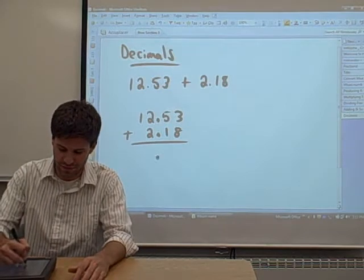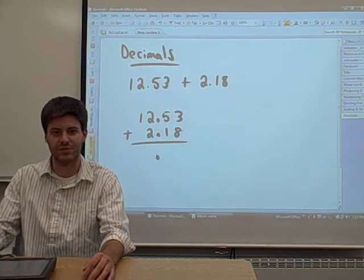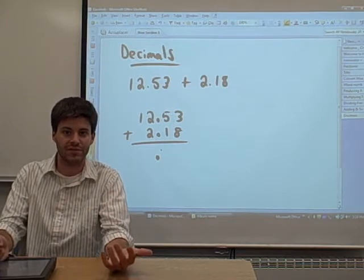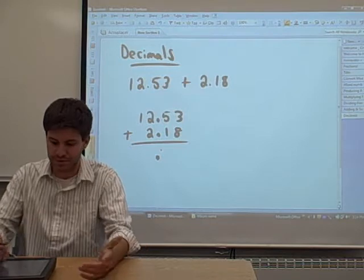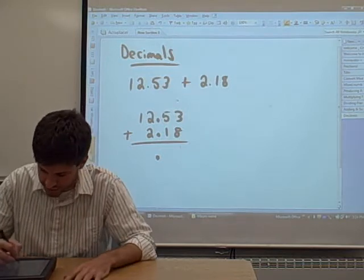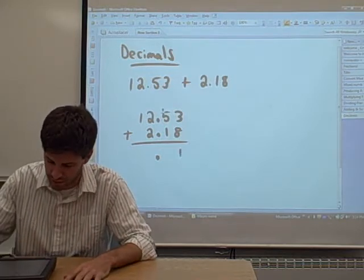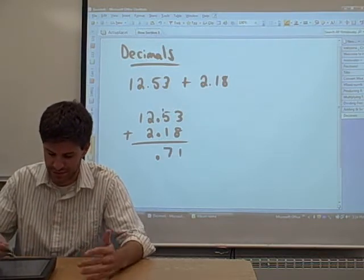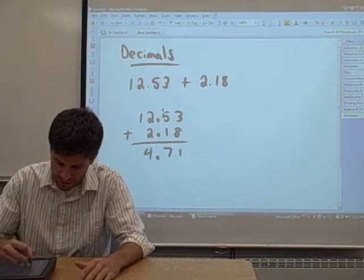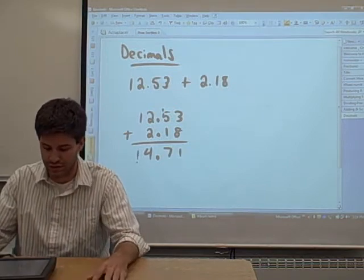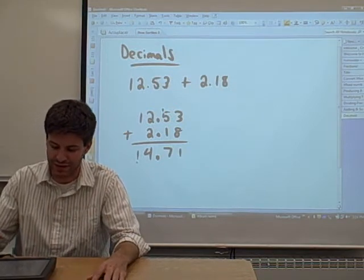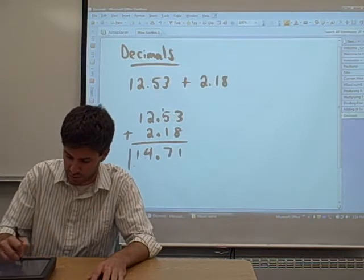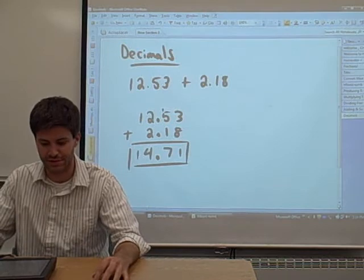When you add all of your numbers together, the decimal in your final result will also be in that line. Other than that, it's just like adding two big numbers. So, 8 plus 3 is 11, carry the 1. 1 plus 5 plus 1 is 7. 2 plus 2 is 4. 1 plus 0 is 1. So we got 12.53 plus 2.18 equals 14.71. And that's our answer.